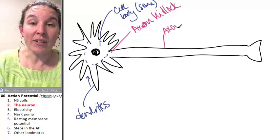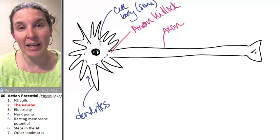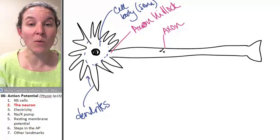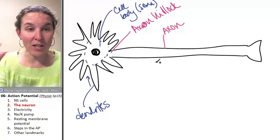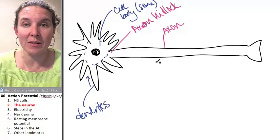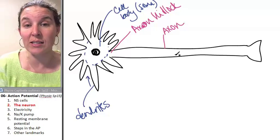When I draw neurons, I often will just draw the axon as a line. And I'm not doing that today because I want to make sure that you recognize that there's cytoplasm inside this thing. It's a cell. It's just a super long and interesting cell.